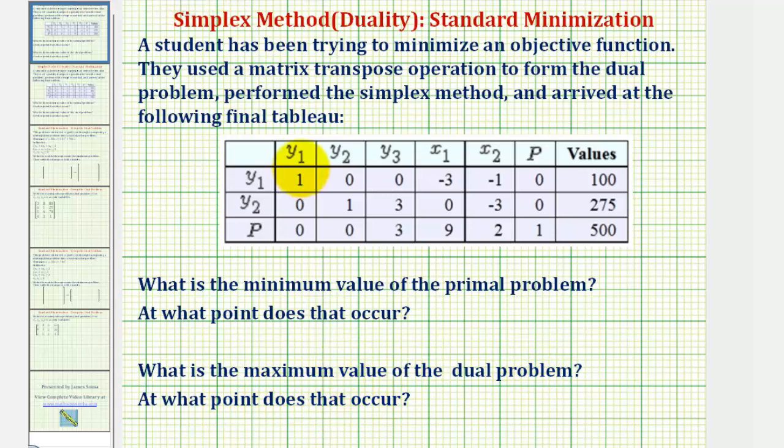Looking at the variables associated with the columns across the top, this tells us that y sub one, y sub two, and y sub three would be the variables of the objective function of the dual problem, and x sub one and x sub two would be the slack variables of the dual problem, but also the variables used in the objective function of the primal problem, or minimization problem.